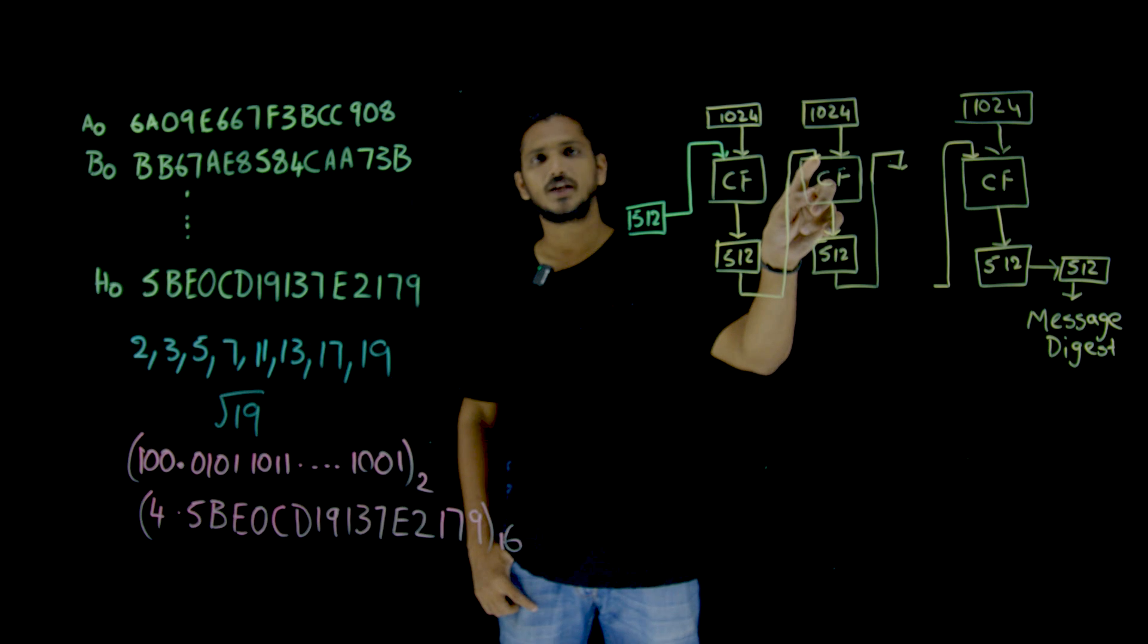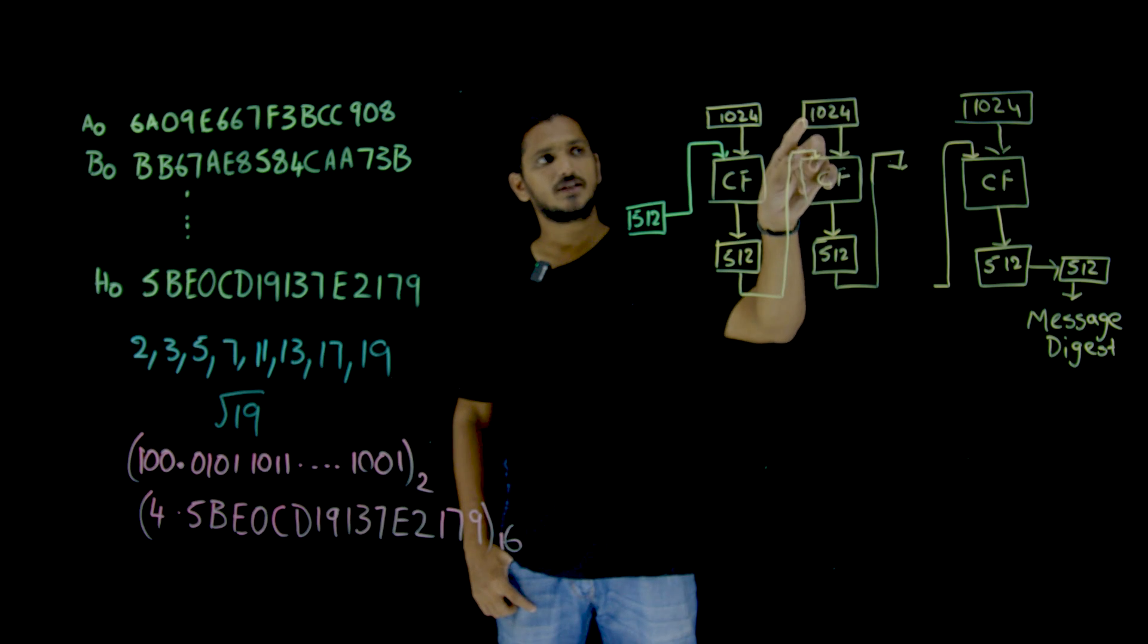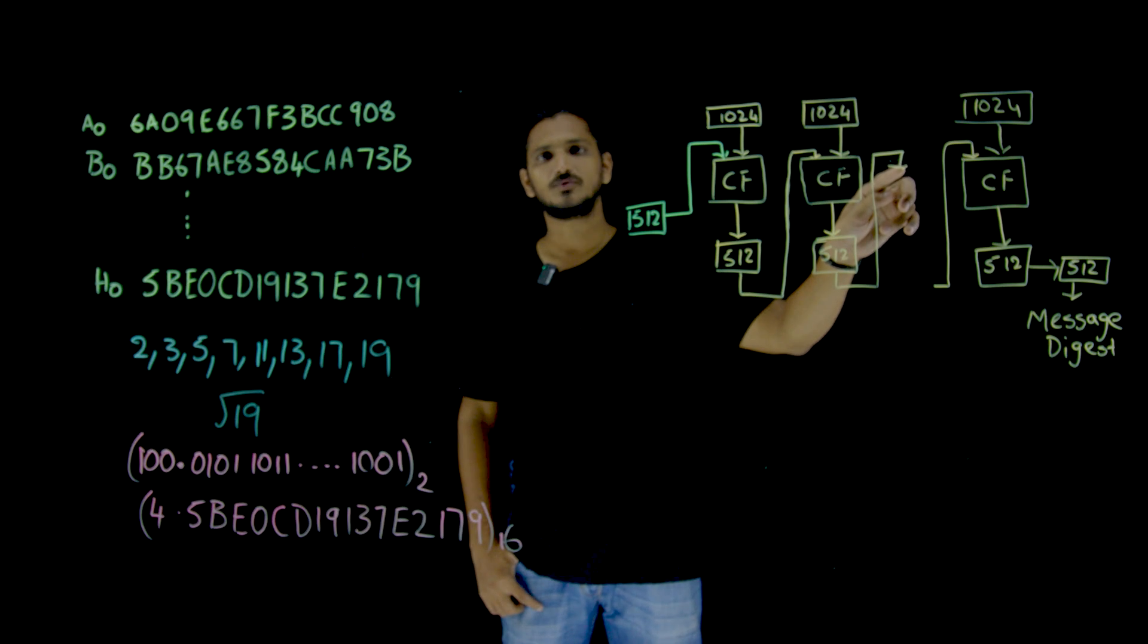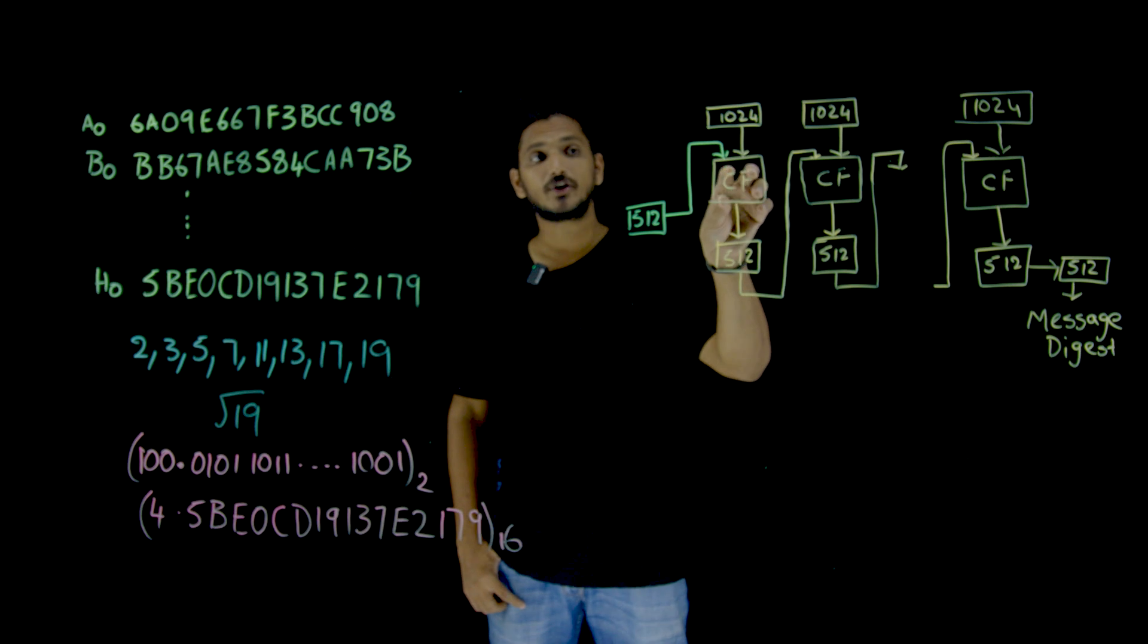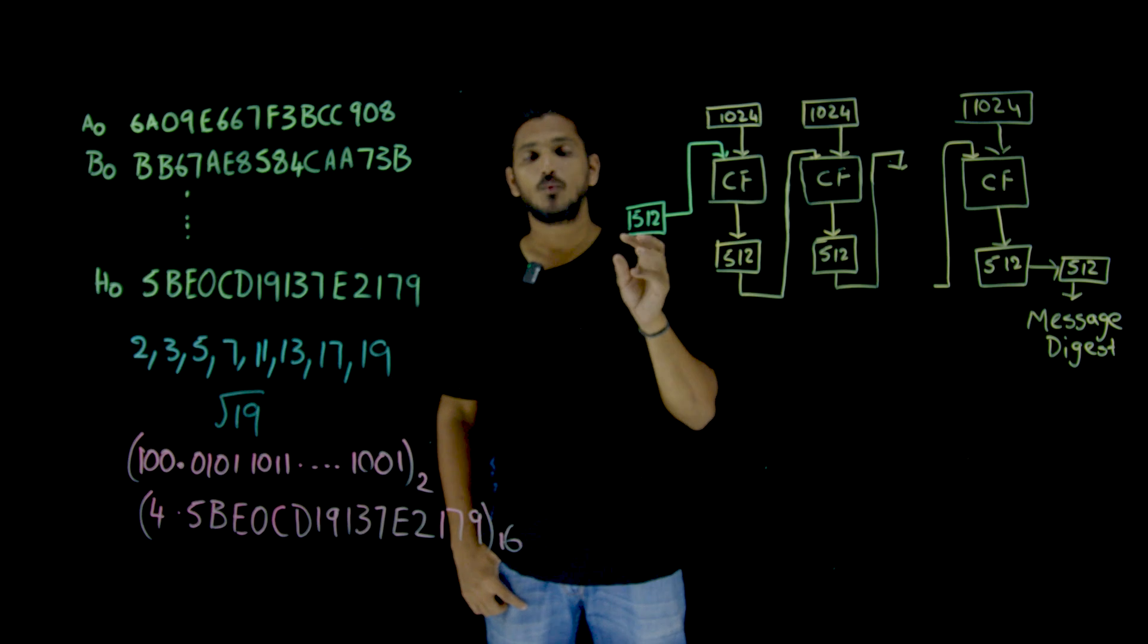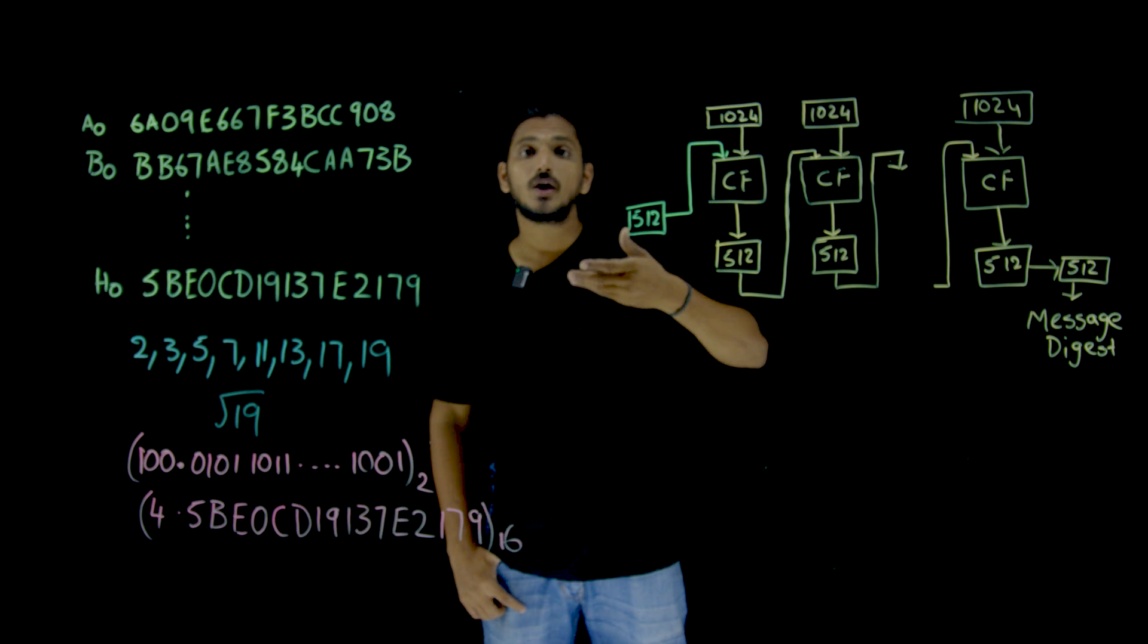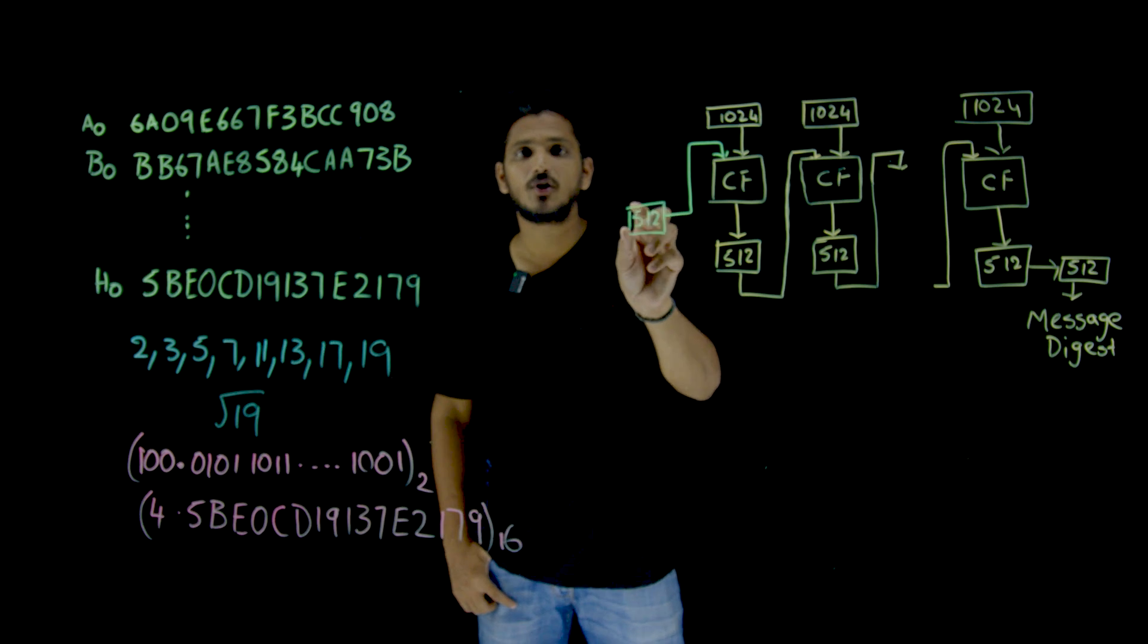This 512 is given as input to the next round, the next compression function. The next 1024 bits input message is considered as input. Similarly, the output is considered into the next one. But what happens to the first compression function? Here we need some 512 bits. So how are we going to initialize this 512 bits?